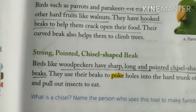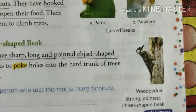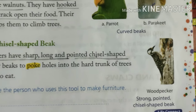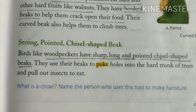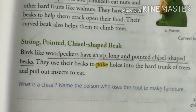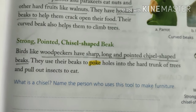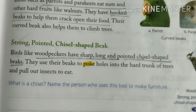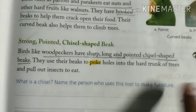Next we have the strong, pointed, chisel-shaped beak. Birds like the woodpecker have a strong and pointed, needle-like, chisel-shaped beak. This kind of beak helps the woodpecker to make holes into hard tree trunks and pull out insects to eat. With the help of this pointed beak, it can make holes in tree trunks and eat insects from them.